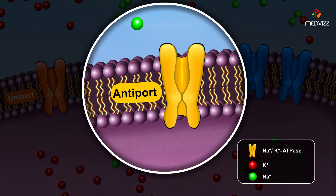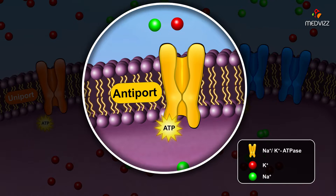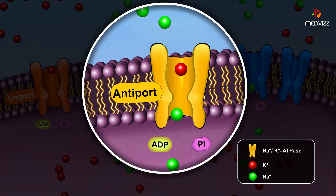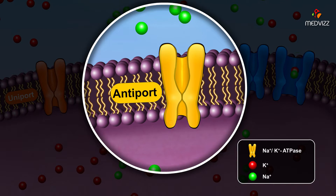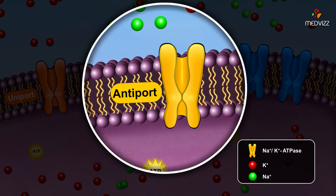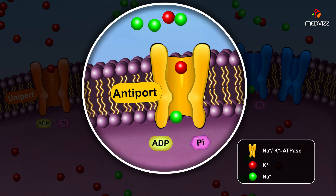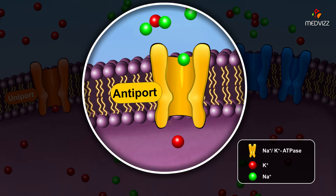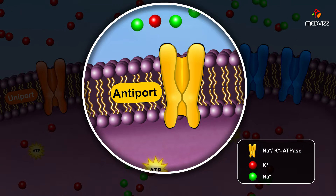An antiport is an active transport protein that transports two molecules in opposite directions against their concentration gradients. These proteins are also ATPases, using ATP to drive the transport.